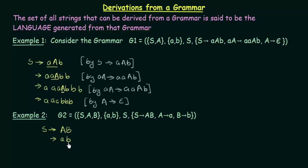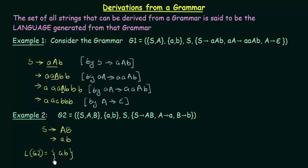We can see that ab is the only string that can be formed from this grammar. Hence, the language generated by grammar G2 is just the string ab. Since this is the only string that can be generated, and our definition says the set of all strings derivable from a grammar is the language generated, this single string ab is the language of G2.